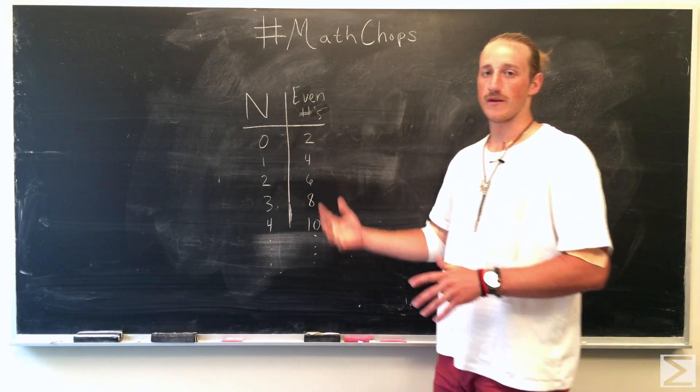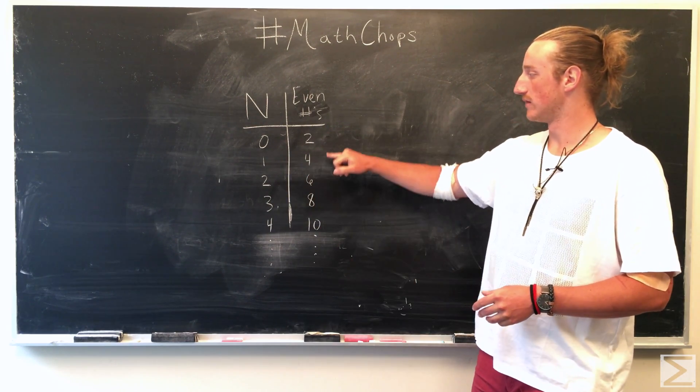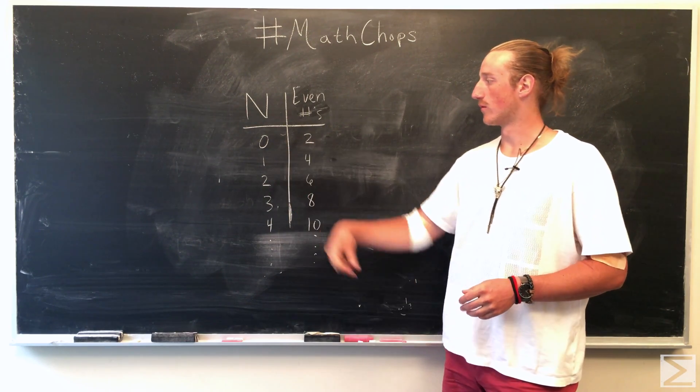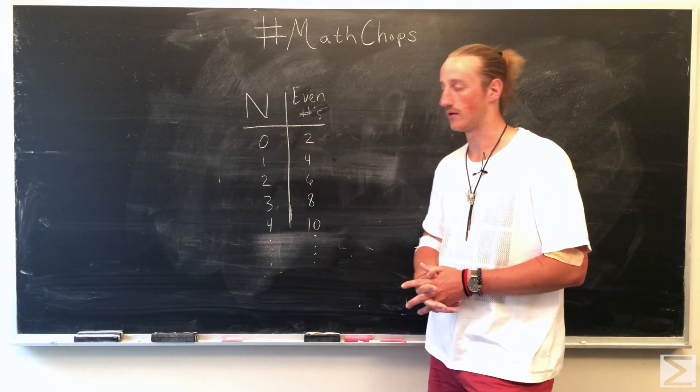So if we were to map something like the even numbers to the natural numbers, you're able to map every even number in a one-to-one correspondence with the natural numbers. So the even numbers are a countable set as they go to infinity.